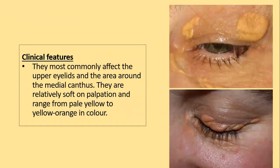Xanthelasma most commonly affect the upper and lower eyelids — the upper more than the lower — and on the upper eyelid mainly on the medial canthus. They are soft on palpation and range from yellow to orange-yellow in color.